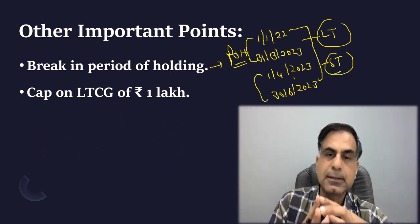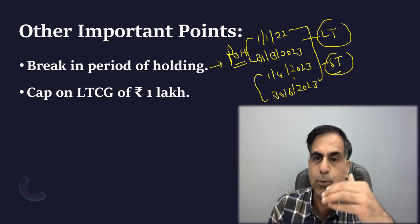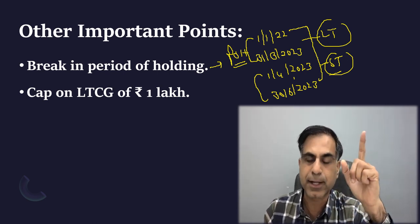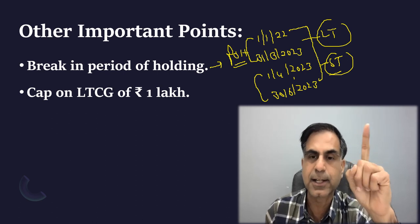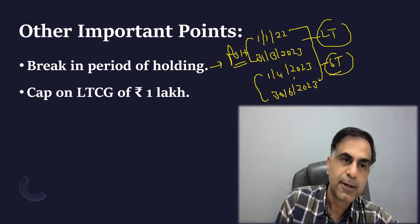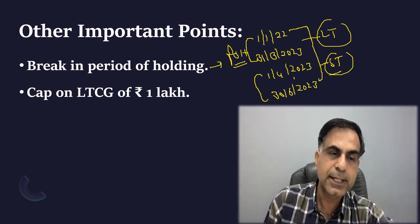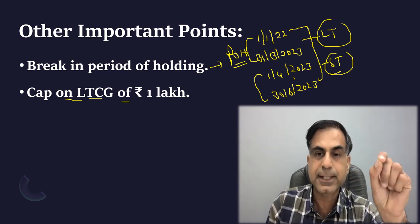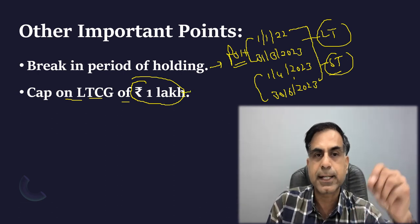One more important advice: whenever you are selling a security for tax harvesting and plan to buy it again, please don't buy on the same day. There must be at least a gap of one day so that the transaction is delivery-based and not speculative. That gap should be maintained. Further, under the present provisions, for tax gain harvesting the cap is rupees 1 lakh — long-term capital gain up to rupees 1 lakh is at nil rate.